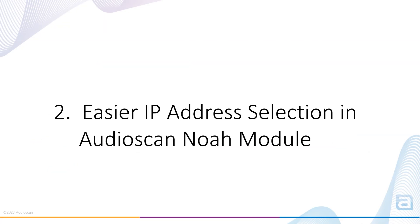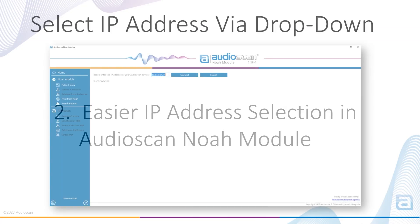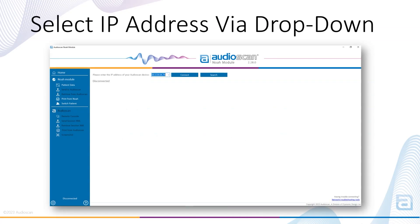The next feature provides easier selection of an Audioscan IP address when multiple Audioscan devices are connected to a PC. The Audioscan NOA module will now remember previously connected IP addresses, which can be selected from the IP address dropdown menu. This makes it quick to switch between Audioscan equipment for transferring data, controlling an Audioscan from your PC, or updating the software of multiple Audioscan devices from one PC.